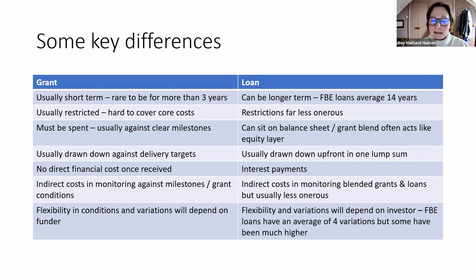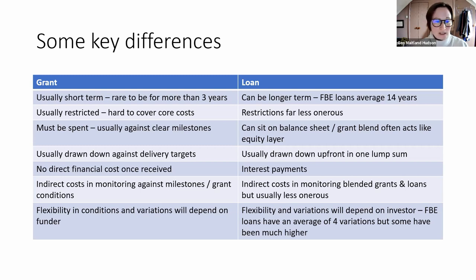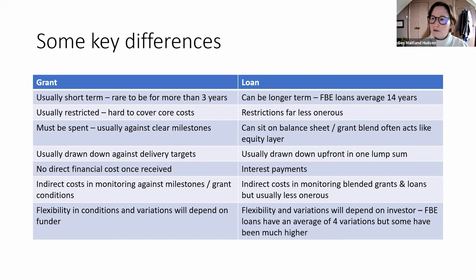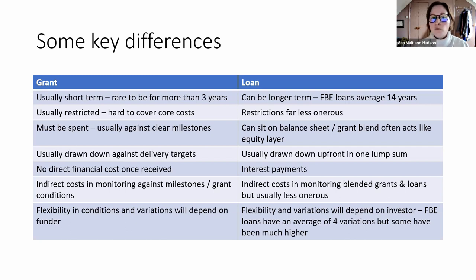Flexibility with a grant depends on your relationship with the funder — some funders are great and will vary the terms and listen to problems; others are pretty restrictive. With loans it differs by investor, but Social Investment Business has typically been very flexible. Across all the loans in our old loan book there's an average of about four variations, but some loans have had up to 14 or 15 variations — really significant things like changes in interest payments, repayment holidays, additional grant layered in, and write-offs of parts of loans.